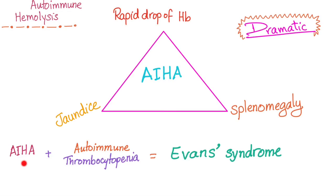When autoimmune hemolytic anemia is associated with autoimmune thrombocytopenia at the same time, we call this Evans syndrome. Remember, autoimmune diseases come with each other.